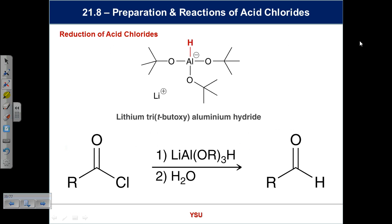Chemists like to invent selective reagents. If we don't want the acid chloride to reduce all the way to the primary alcohol — like using PCC/PDC to stop at an aldehyde in oxidation — there's a reagent that stops at the aldehyde in the reductive direction. This gives a very simple synthesis of an aldehyde from an acid chloride, allowing us to go from a carboxylic acid family to an aldehyde.